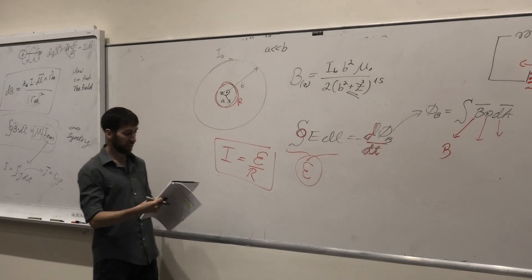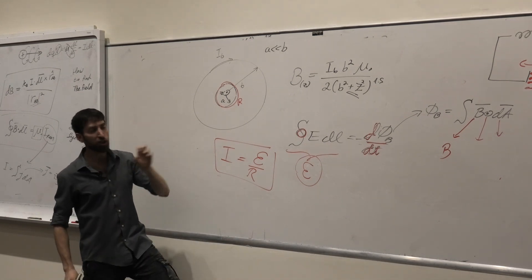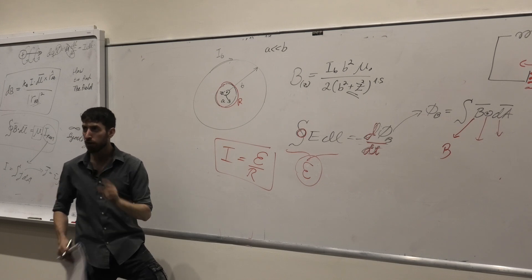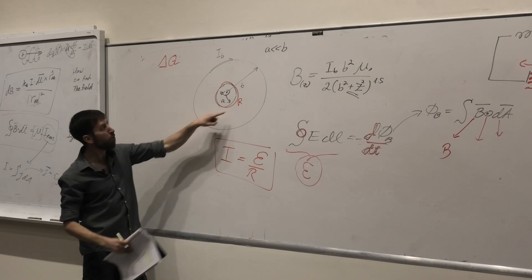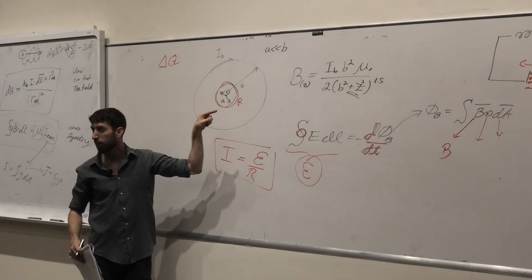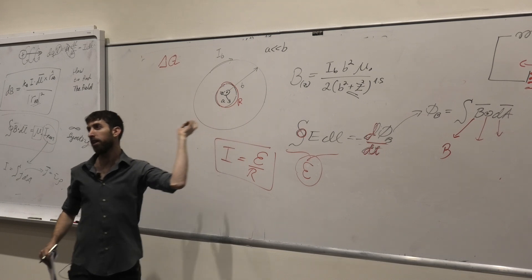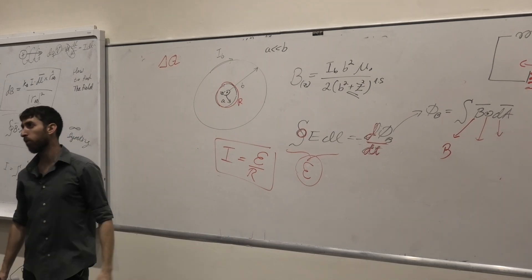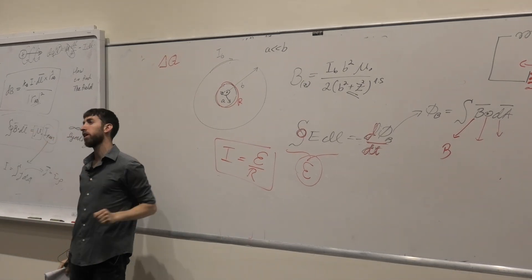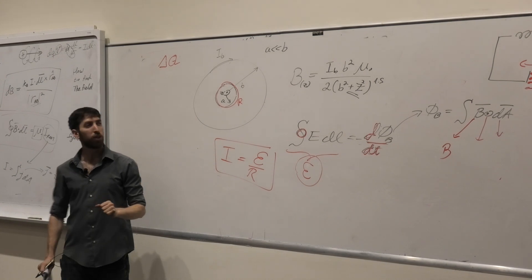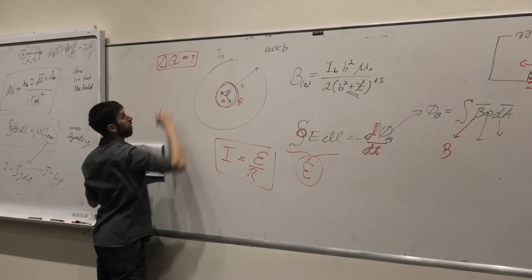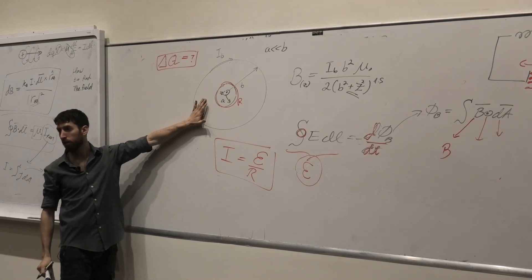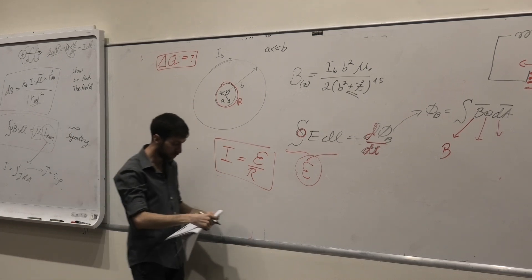But now they ask you something else. They ask you, how much charge, how much charge delta Q has been moving inside these rings when I take this ring from here until far away as I want? Infinity, the other side of the campus. So that was the question. How much charge actually moved inside this ring?